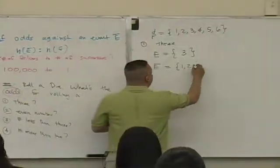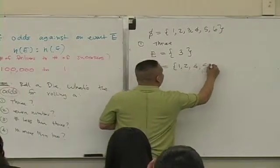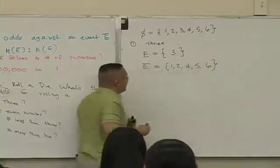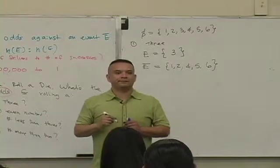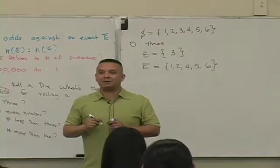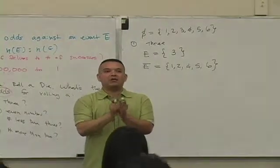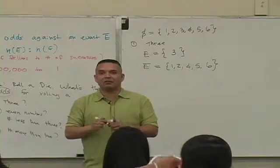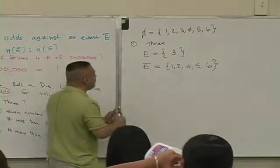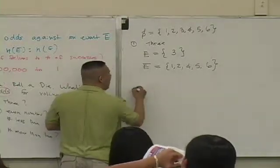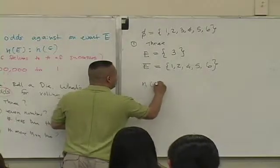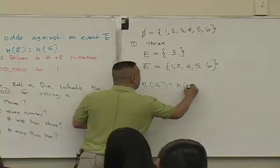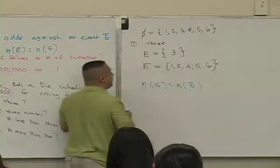So it's one, two, four, five, and what? Six. You okay with that? This information you need to know to answer the question. And then you need to know the definition, which is what? Odds for is the number of outcomes in the event to the number of outcomes in the complement of the event.